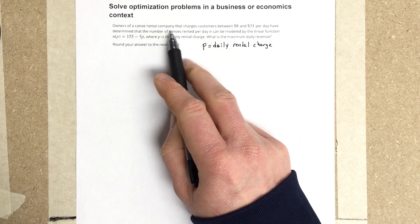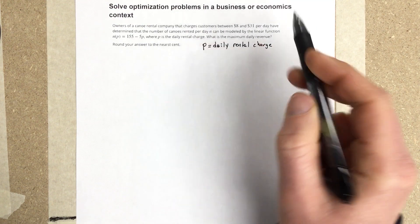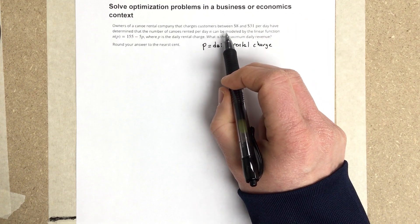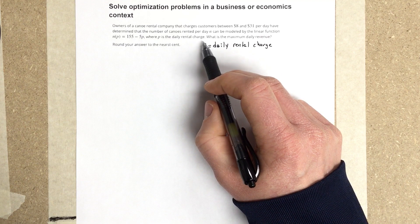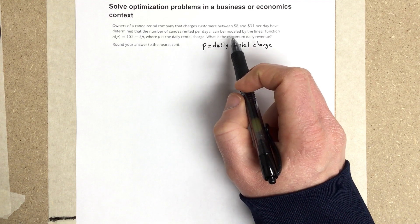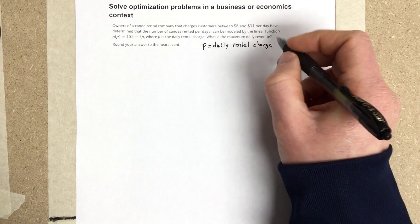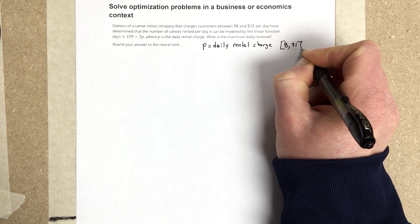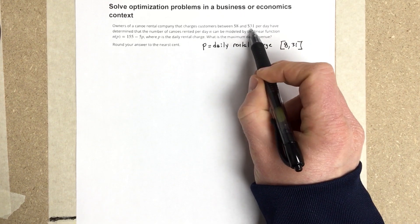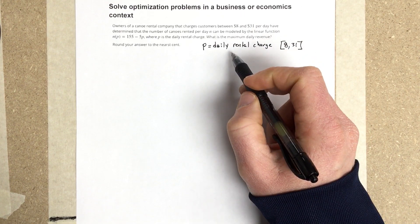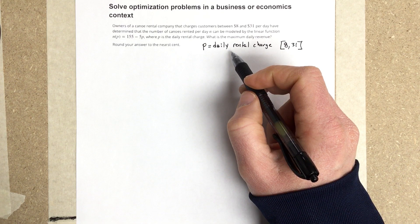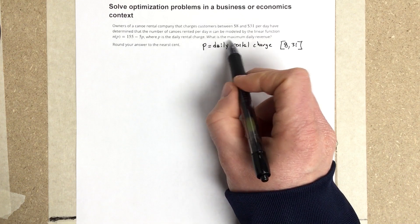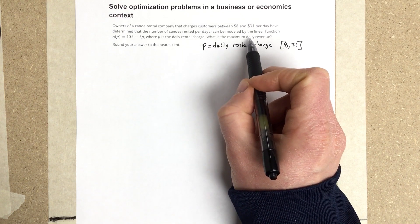The rental company charges customers between $8 and $31 per day, which tells us that P is going to have to be between $8 and $31. We're going to have to maximize daily revenue, which means we have to get an equation for revenue.